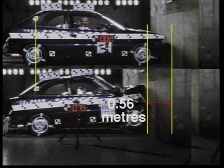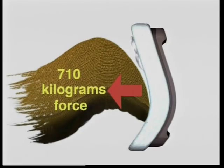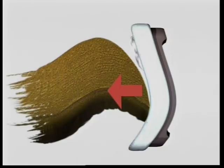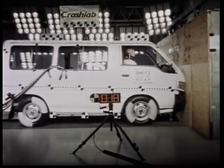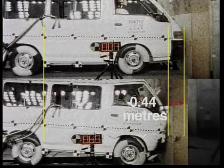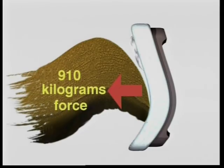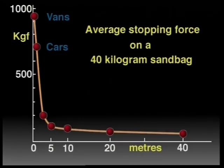Smaller cars stopped in an average of 0.56 of a metre, a similar distance to the larger cars. The average stopping force on a sandbag would be 710 kilograms force. A van has less bonnet, so there's less distance to crush before it crumples into the occupants' space. The average stopping distance of the vans tested was 0.44 of a metre, and the average stopping force on a sandbag would be 910 kilograms force. We can see that the shorter the stopping distance, the greater the force on the occupants.